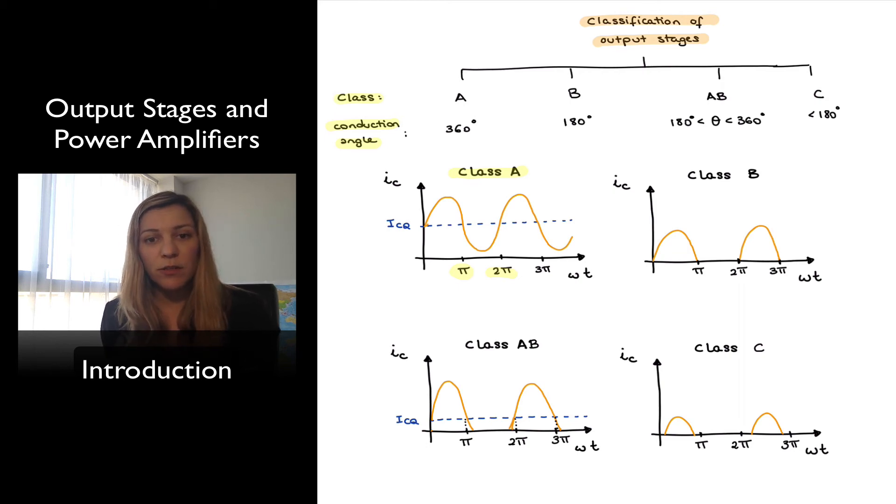A Class B amplifier is characterized by transistors that are conducting for half a cycle so 180 degrees of conduction angle or pi if you're talking in radians and so we can see that in the second graph where the collector current only has a non-zero value between zero and pi radians in this case so for half a cycle and during the other half a cycle the transistor is turned off thus yielding better power efficiency as we shall see that there are other problems that arise with these Class B configurations.